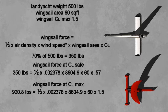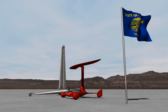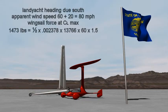That's 70% the weight of the 500 pound yacht. CL max — the maximum coefficient of lift for this wind sail — is 1.5. At CL max, the side force would be 920 pounds, nearly twice the yacht's weight. Turning to head directly into the wind increases apparent wind velocity to yacht speed plus wind speed: 80 miles per hour. At CL max, the wing sail can generate a force of 1,473 pounds — almost three times the yacht's weight.